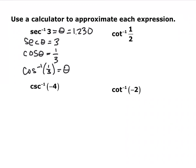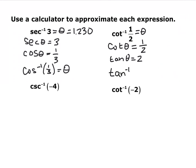For cotangent inverse of 1/2: cotangent of θ equals 1/2, and the reciprocal of cotangent is tangent, so tangent of θ equals 2. Therefore, tangent inverse of 2 equals θ. Hit second-tangent and enter 2. In radian mode, that gives 1.107.